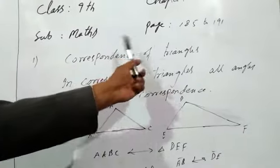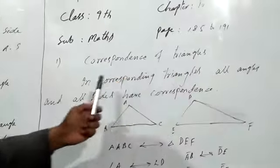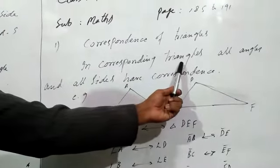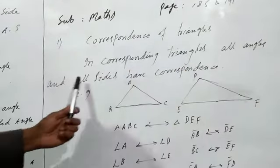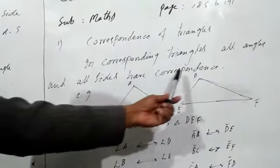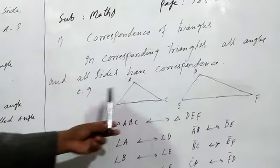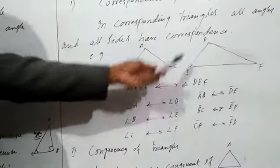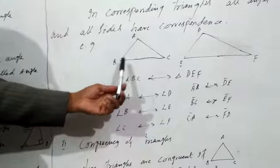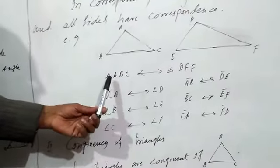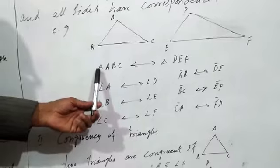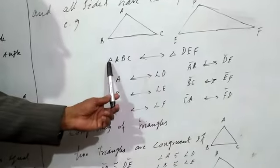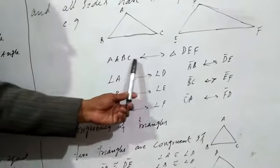If two triangles correspond to each other, then in corresponding triangles all angles and all sides have correspondence. For example, we have two triangles ABC and DEF. In these two triangles, the correspondence is shown as: triangle ABC corresponds to — using the sign of correspondence — triangle DEF.